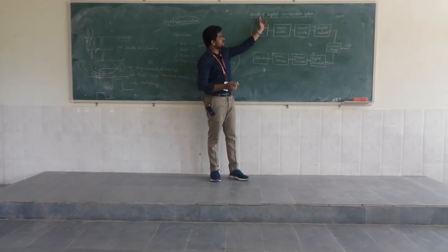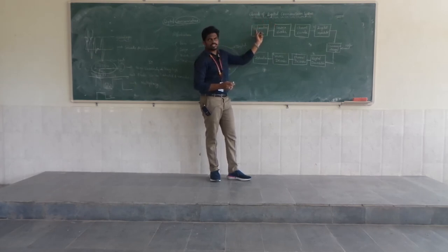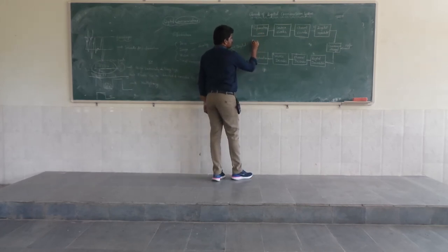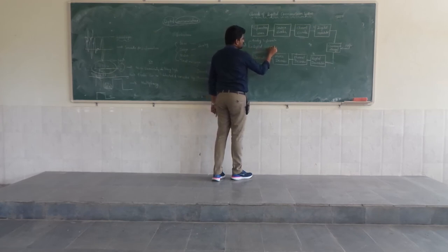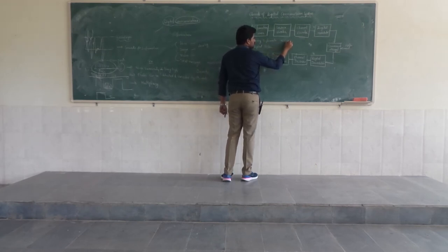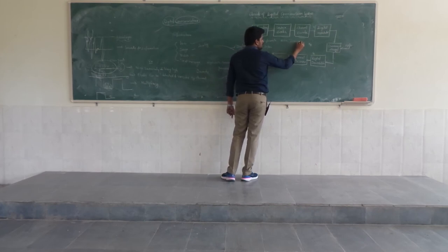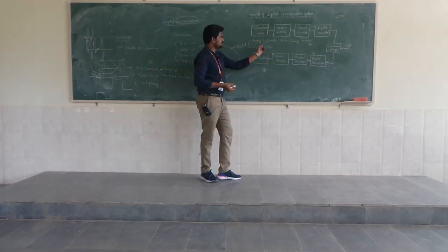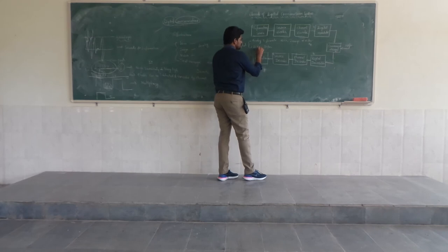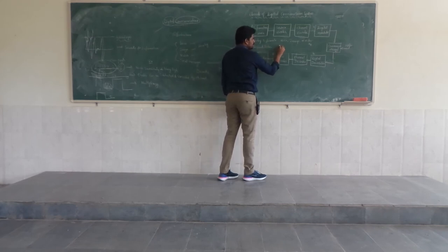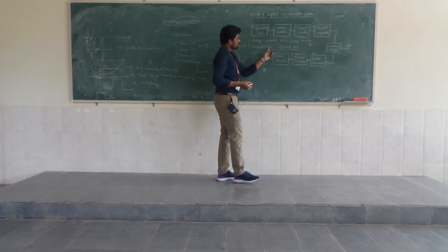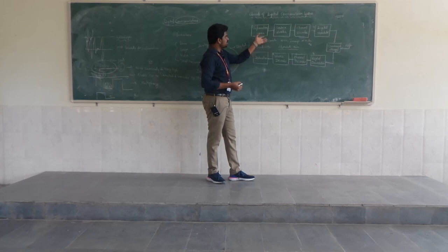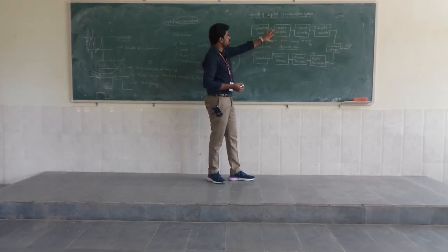Now if you see the block diagram for digital communication, or the elements of digital communication: the first one is the information source. Generally the types of information source are analog information source and digital information source. The analog information source is nothing but voice signal — it is one type of analog signal — otherwise some image or some videos, which are varying with respect to time. Otherwise the next one is the discrete information source, whose examples are alphabets and numerals. These are the examples for the discrete information source — these are the types of information we have to communicate to the destination.